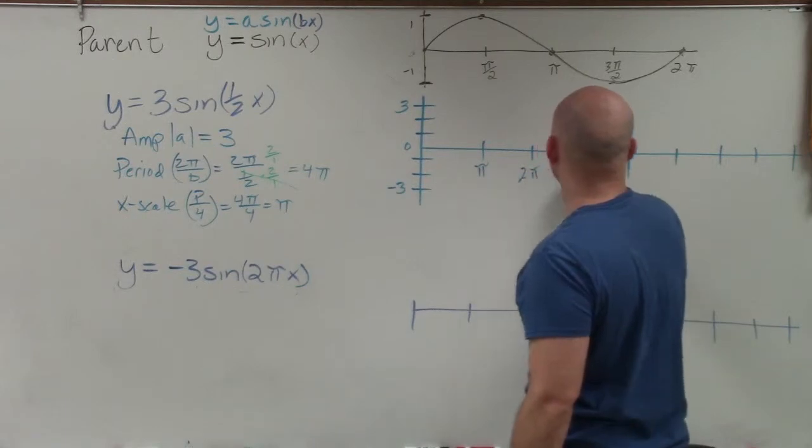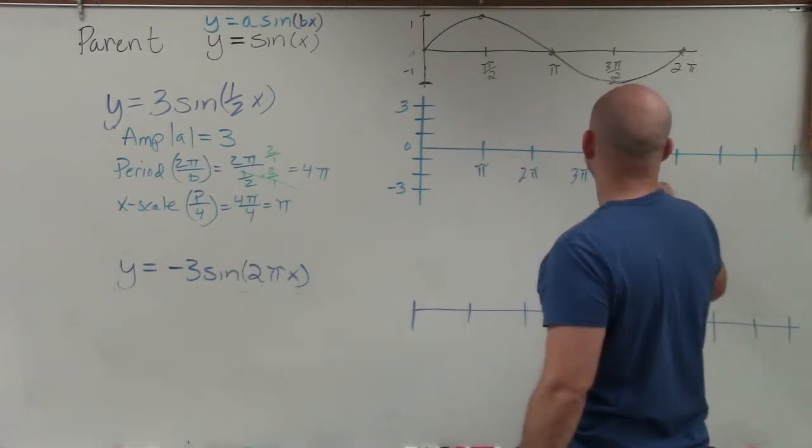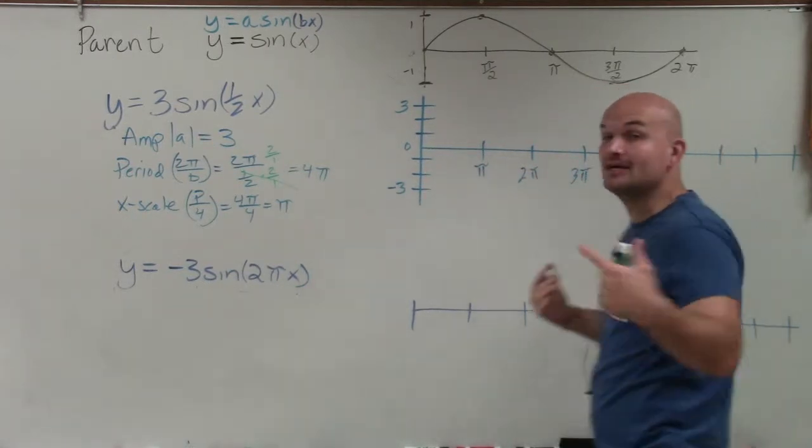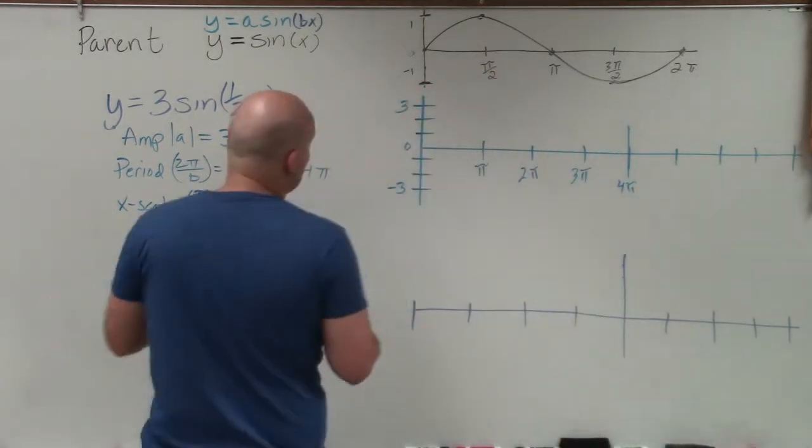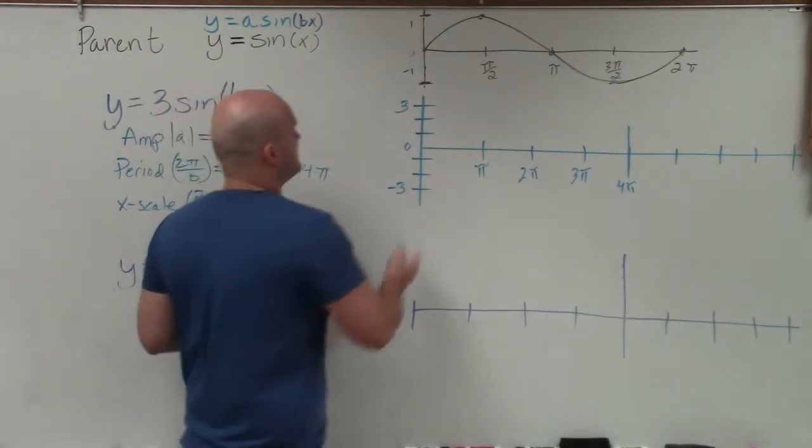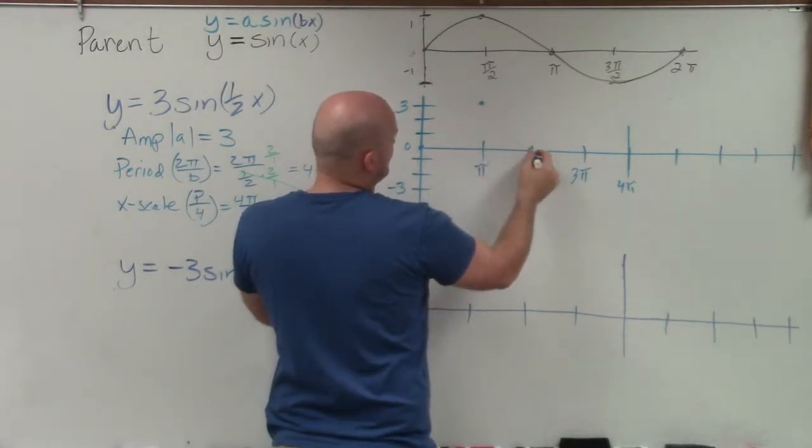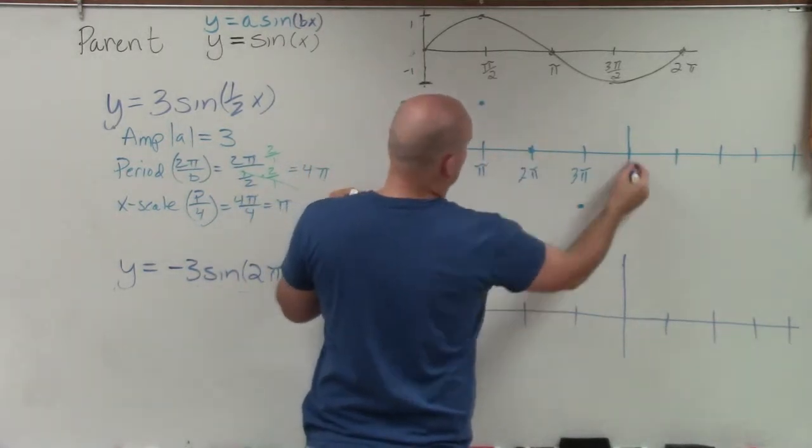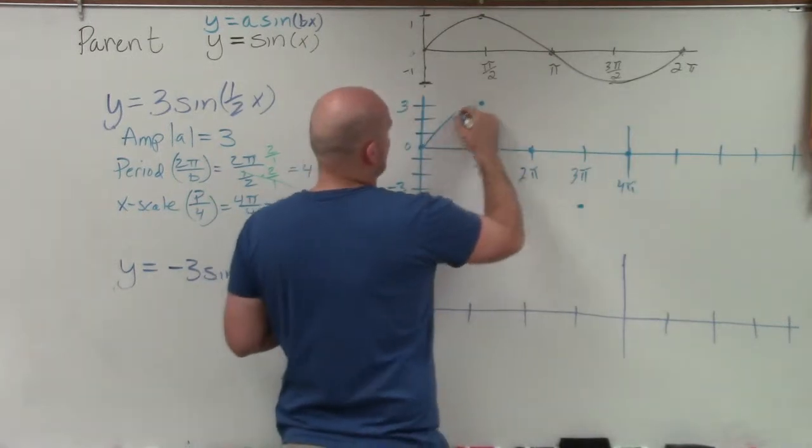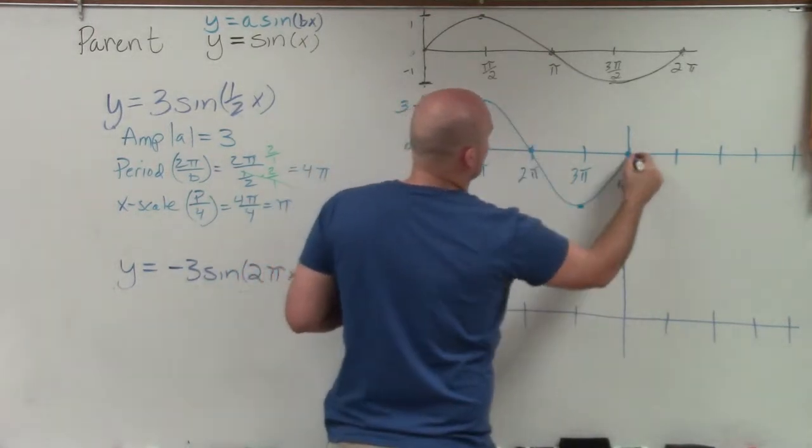This would be 2 pi, 3 pi, and then 4 pi. And then we know, hey, at 4 pi, it completes a revolution, right? So let's go ahead and graph what that first period would look like. Well, it's going to start at 0 for sine. It's going to go up to 3 at pi, down to intercept, down to the minimum, and back up.